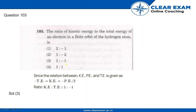Since the relation between kinetic energy, potential energy, and total energy is: minus of total energy equals kinetic energy, which equals minus of potential energy divided by 2. So the ratio of kinetic energy to total energy will be 1 to -1. Therefore, the correct answer is choice number 3.